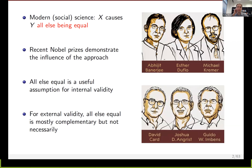Let's start off with the dominant paradigm for social science nowadays, which is 'all else equal.' The idea is that you want to have internal validity in the sense that X, some independent variable, is causing Y, all else being equal. Recent Nobel Prizes in economics have demonstrated the influence of this approach — Banerjee, Duflo, and Kramer won in 2019 for field experiments, and Card, Angrist, and Imbens won in 2021 for natural experiments.